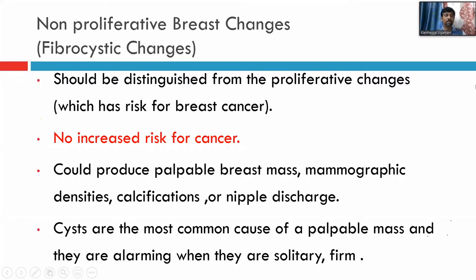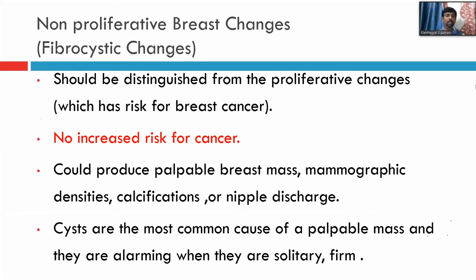Fibrocystic changes should be distinguished from proliferative changes because proliferative changes carry a risk for breast cancer. For fibrocystic changes alone there is not much risk for cancer, and the risk is slightly more than fibroadenoma but overall no increased risk. Fibrocystic change can produce a palpable breast mass, mammographic densities, calcifications, or nipple discharge. Cysts are the most common cause of a palpable mass and are alarming when solitary and firm — if the presentation is diffuse you need not worry, but if solitary and localized you need to further investigate to rule out malignancy.